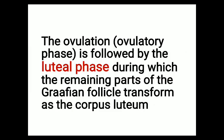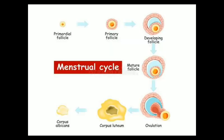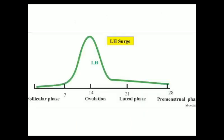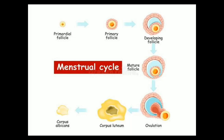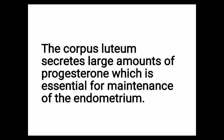Ovulation is followed by the last phase of the reproductive cycle - the luteal phase - during which the remaining part of the Graafian follicle transforms into corpus luteum, a yellow mass of tissue. The primordial follicle forms a primary follicle, then secondary, tertiary, and finally the Graafian follicle, which ruptures and transforms into the yellow corpus luteum.